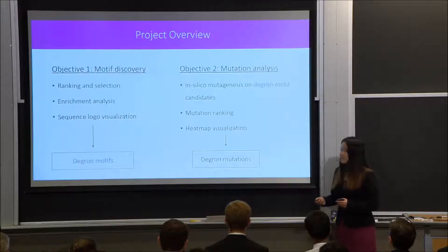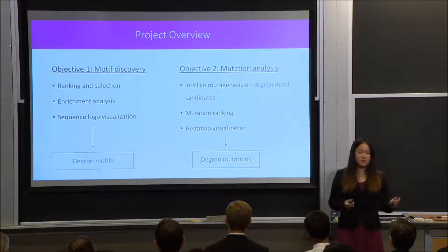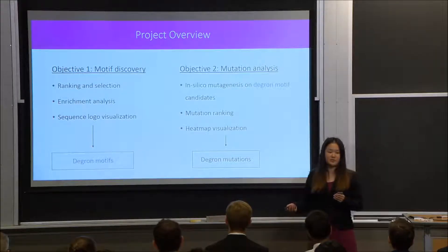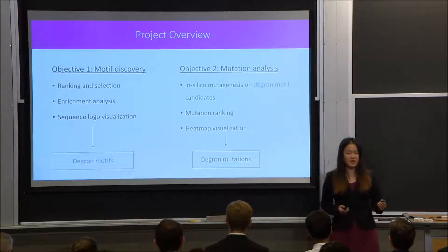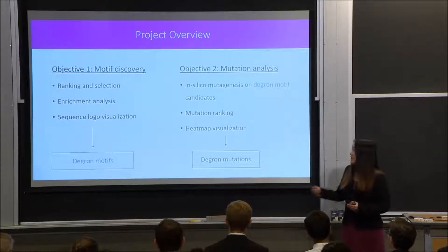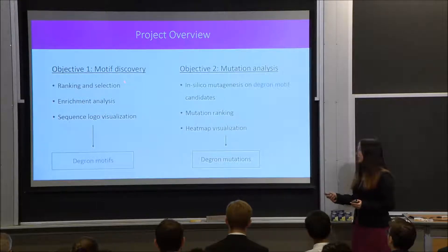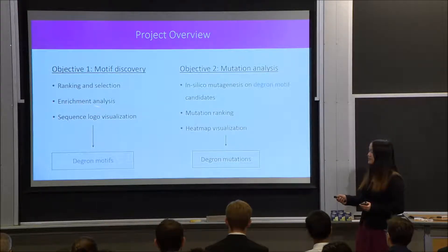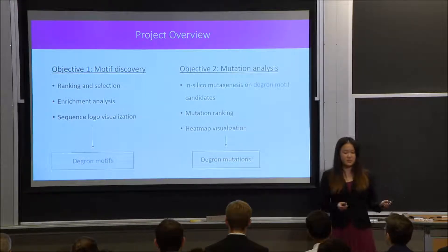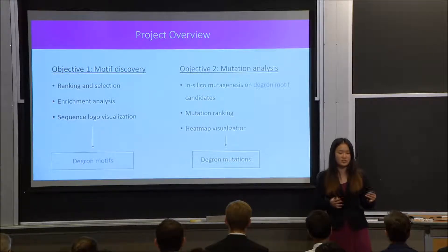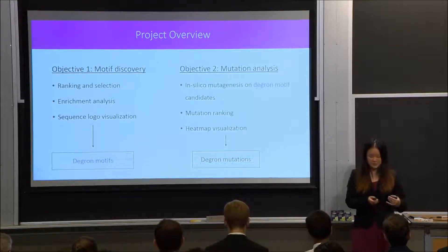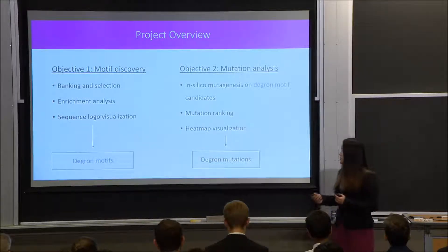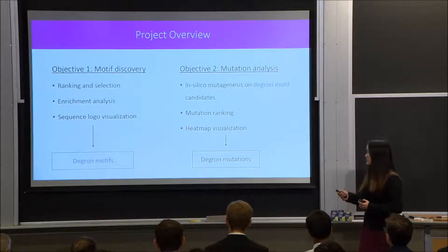This brings me to my project objectives. In our research, we established two primary objectives. First, we wanted to characterize the degron motifs learned by the deep degron model, employing a variety of computational and statistical techniques. Second, once we identified these degron motifs, we wanted to mutate them in silico to see which sorts of mutations would cause the greatest impact on these identified potential degron motifs, employing mutation ranking and heat map visualization.